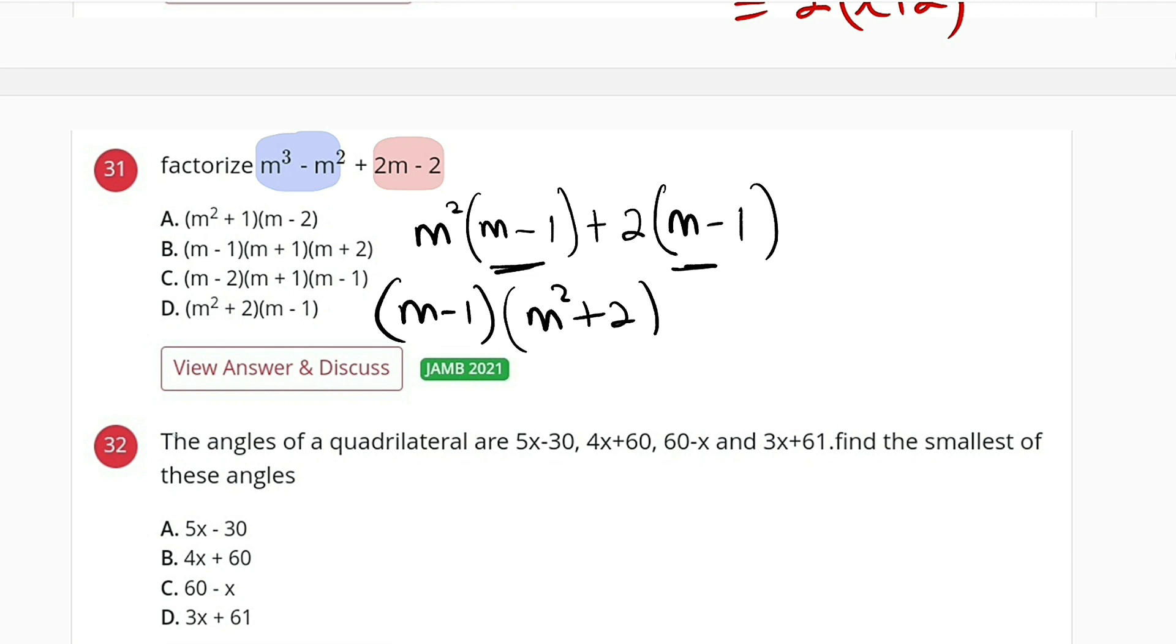The right option is option D: (m² + 2)(m - 1).